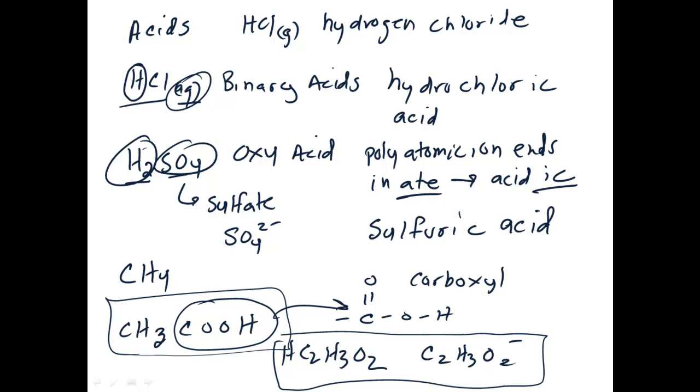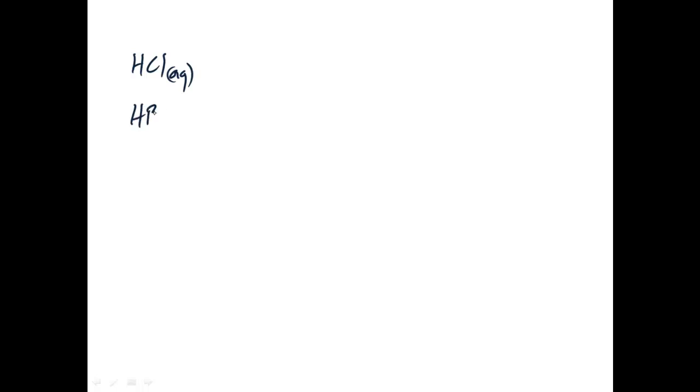Here is the first crucial step for chapter 15: you have to memorize the six strong acids in water. Three of them are binary acids — hydrochloric (don't forget the aqueous), hydrobromic, and hydroiodic.